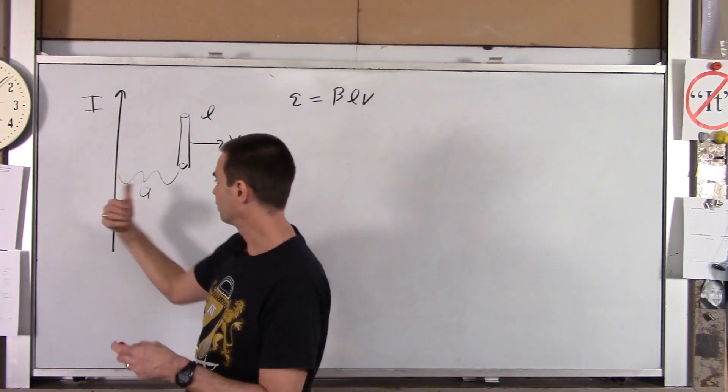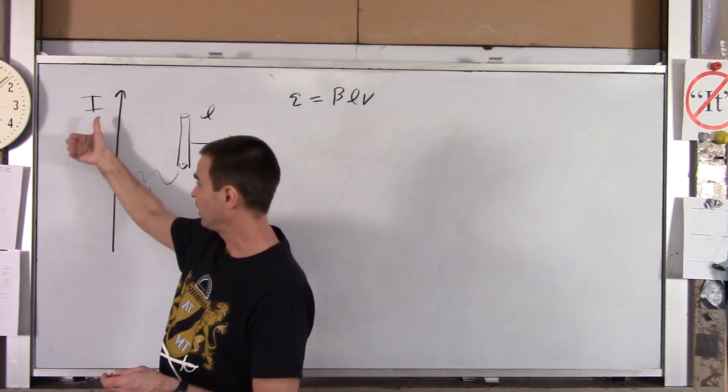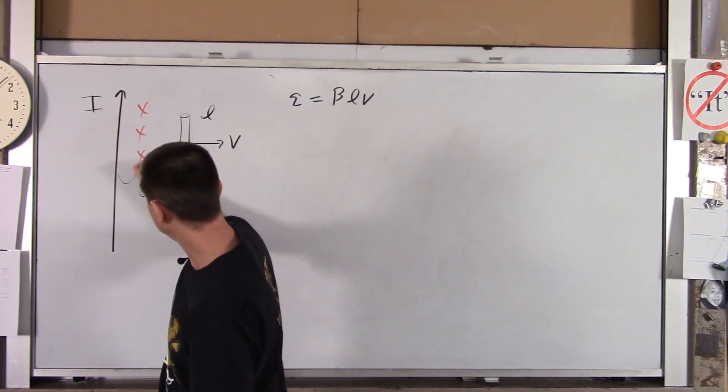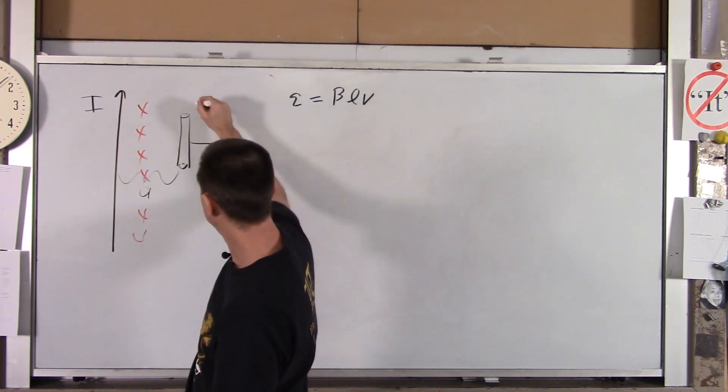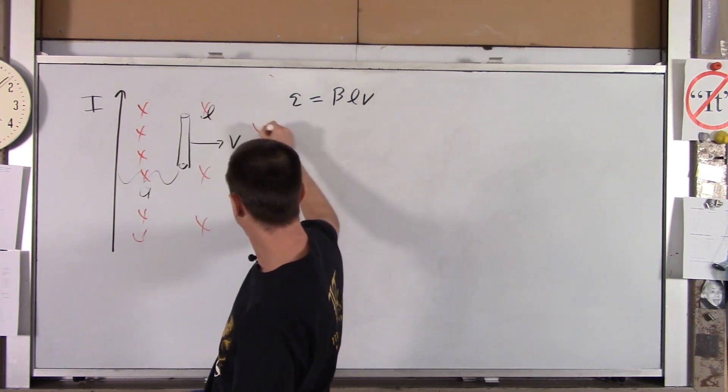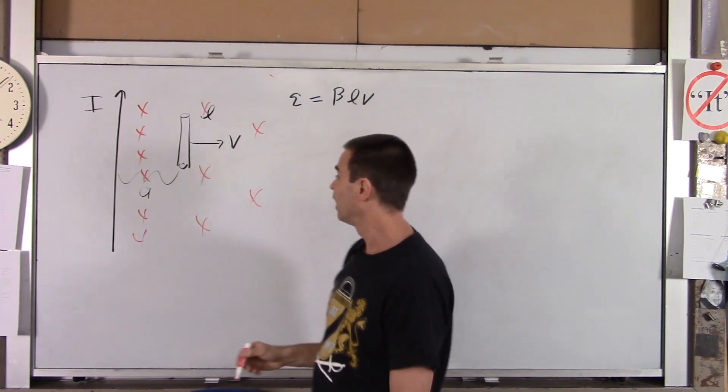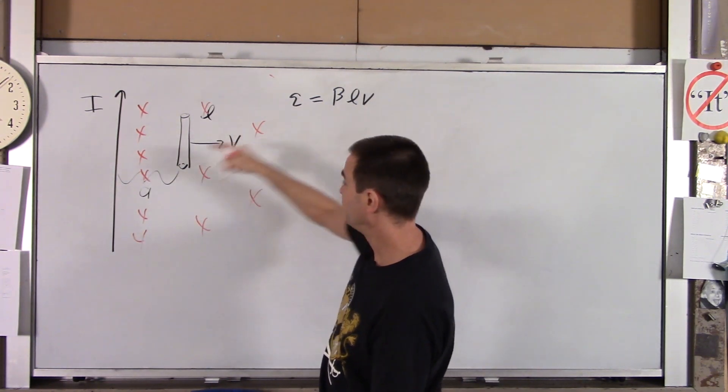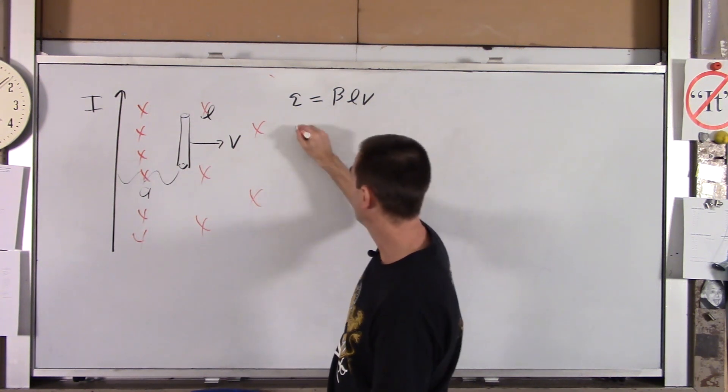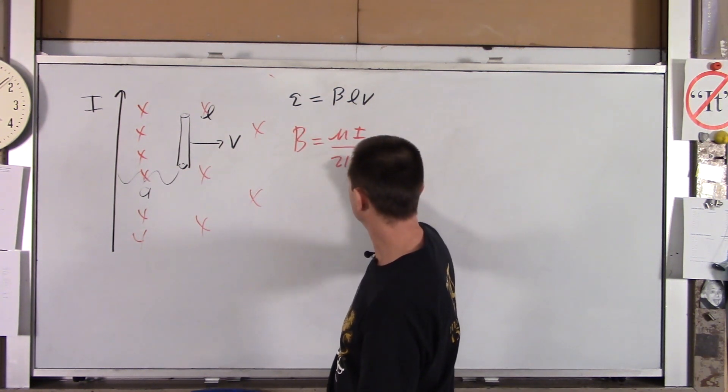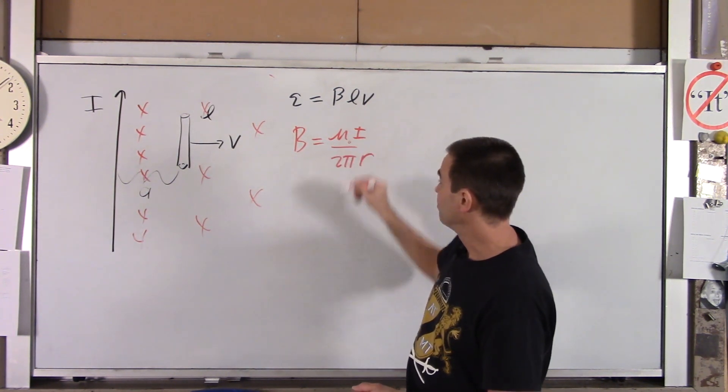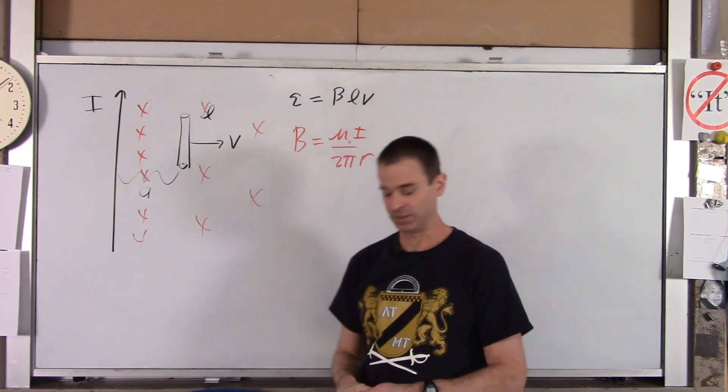And if I use my right-hand rule, the magnetic field comes out of the page there and goes into the page over here. It'll be very, very strong near that wire. And as I get further away from that wire, it's going to get weaker and weaker. So the magnitude of that magnetic field varies with distance from that wire. And the equation is mu naught I over 2 pi r. So that's going to give us our strength of our magnetic field at that point.